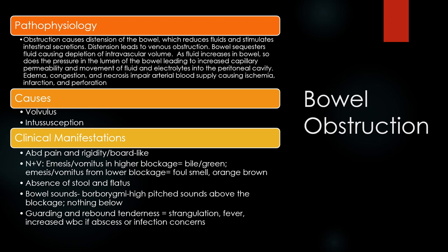Bowel obstruction is when a blockage is preventing the normal flow of intestinal contents through the intestinal tract. This can be mechanical — from adhesions, hernias, abscesses, tumors, or strictures — or functional/paralytic, where the intestinal mucosa cannot propel the contents along the bowel. Functional obstruction can occur because of diabetes, neurologic disorders like Parkinson's, or during bowel surgery when the bowels are just starting to wake up again. A bowel obstruction can occur in the large or small intestine and be partial or complete.